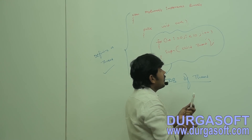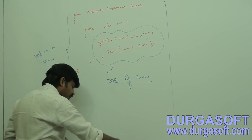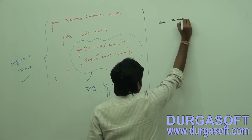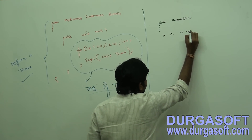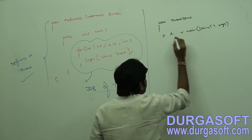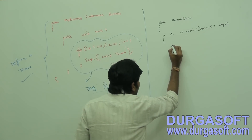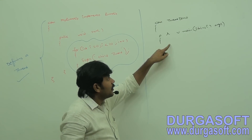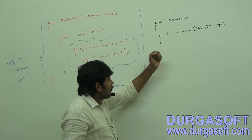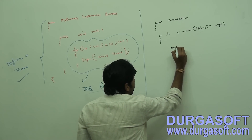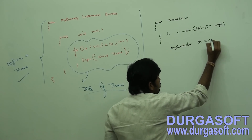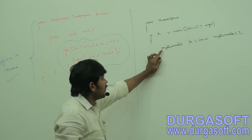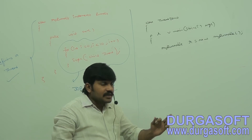Now I want to start this thread. We define class ThreadDemo with public static void main(String[] args). At this point there is only one thread — the main thread. The main thread creates a MyRunnable object: Runnable r = new MyRunnable(). This line is executed by the main thread.